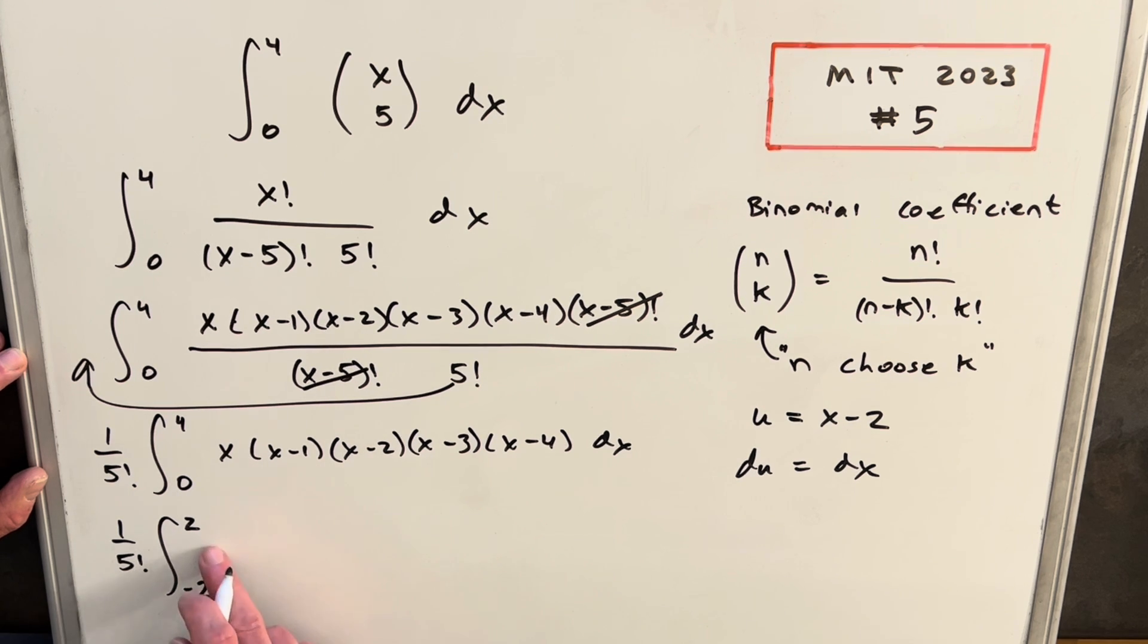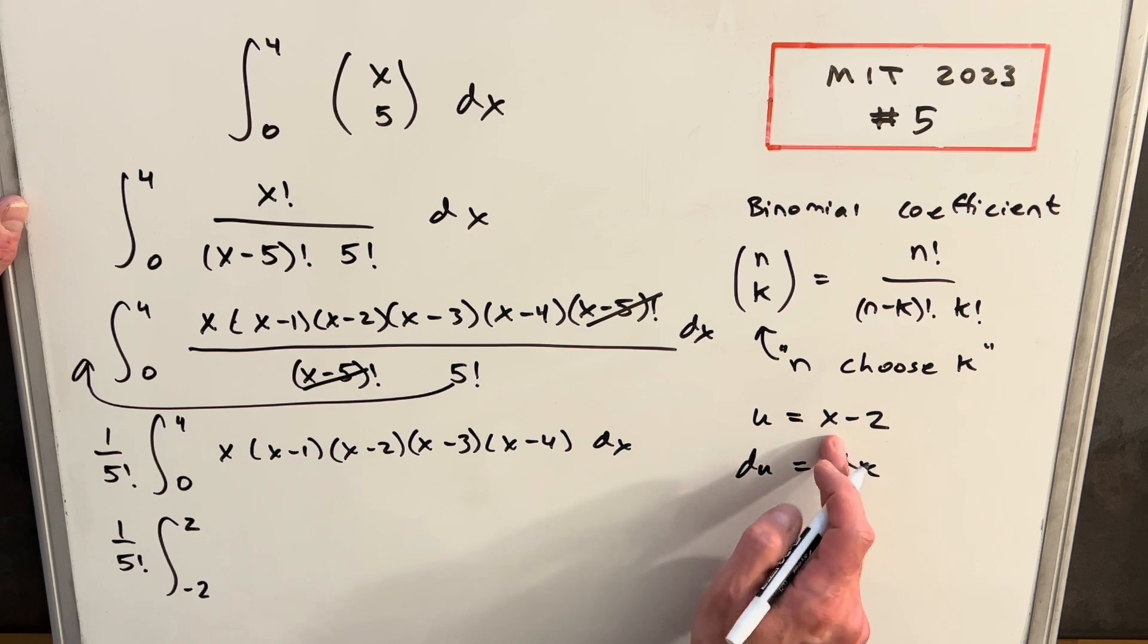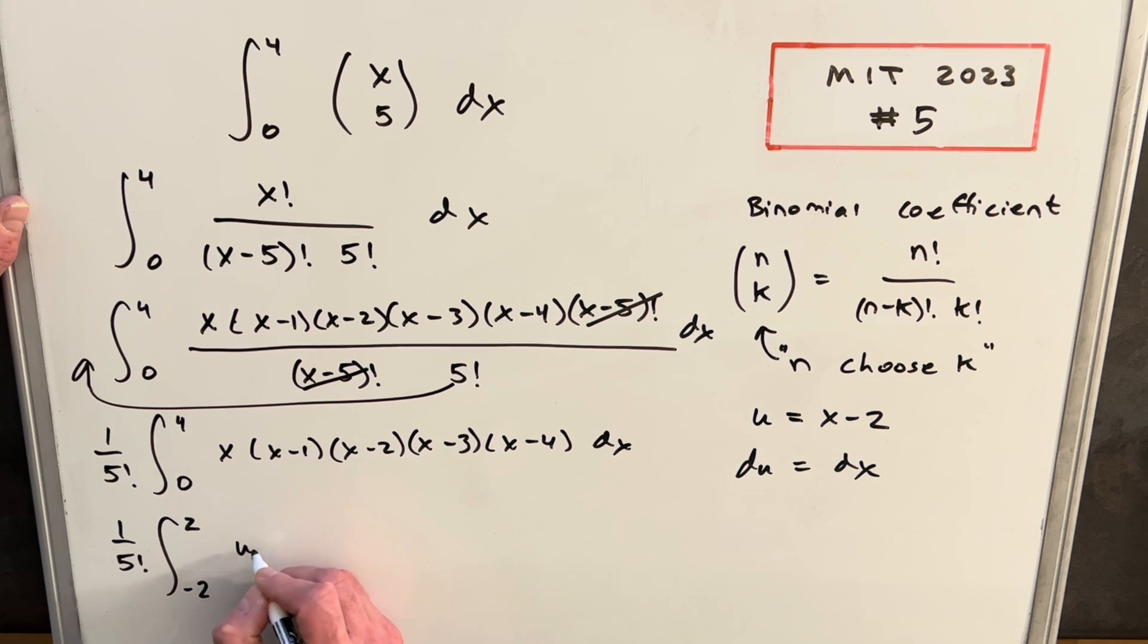Part of the reason why I did that is so we have this symmetry. Then just with a little rearranging, x is going to be if we add two, we have x equals u plus two. And then these terms are decreasing. So we're going to have u plus one times u times u minus one times u minus two du.